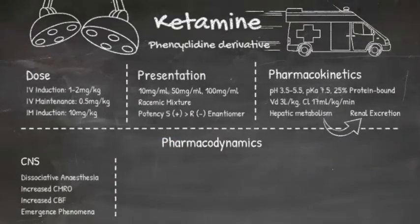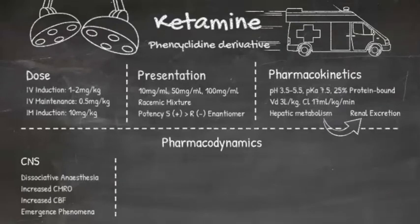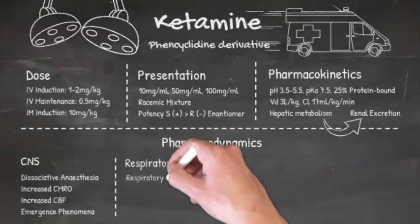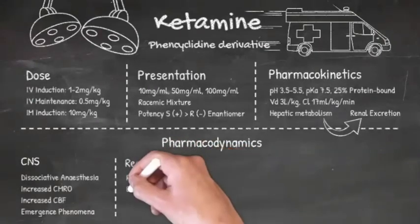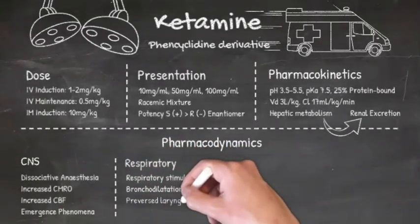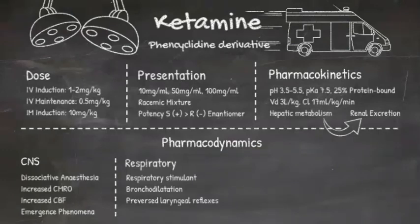The emergence phenomena of ketamine can be quite problematic, with very unpleasant hallucinations. Unlike other induction agents, ketamine actually increases respiratory drive. It's a bronchodilator, so sometimes used in severe asthma, but it's also worth remembering that laryngeal reflexes are preserved, so the likelihood is you'll need to paralyse the patient to manage their airway.